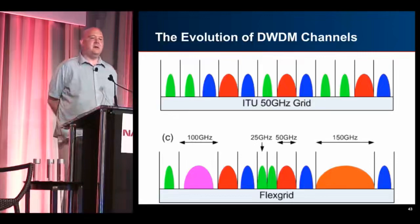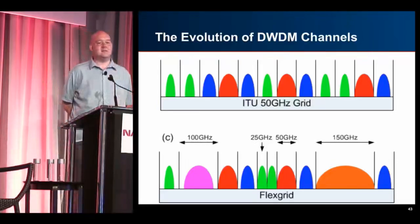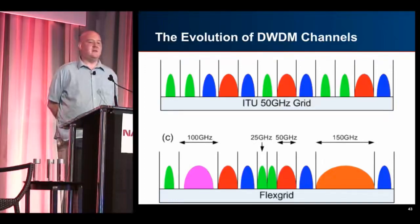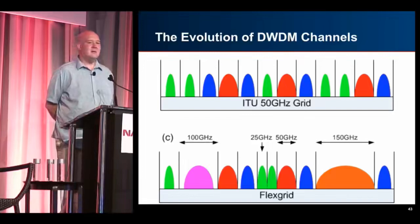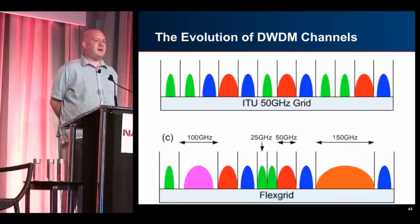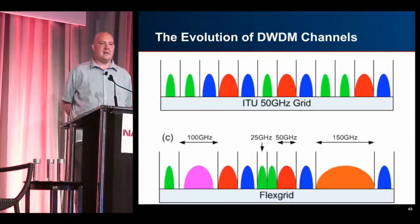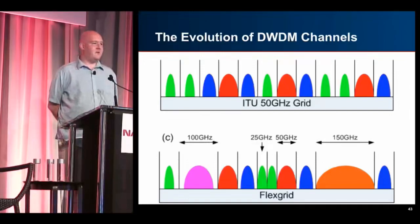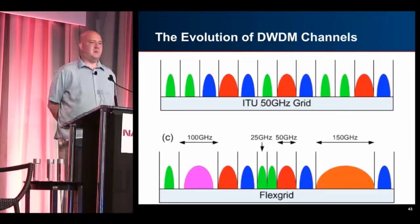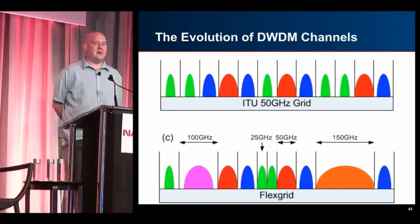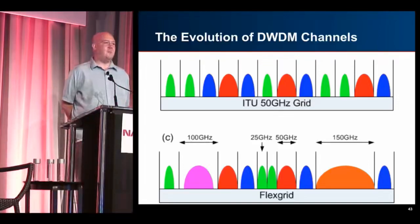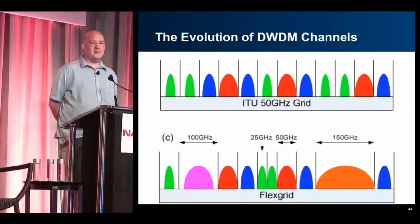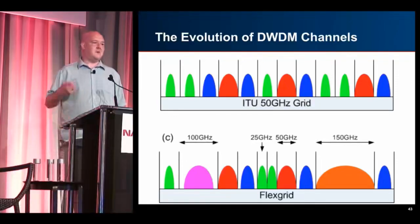Another evolution in DWDM is what's called flex grid, or gridless. Instead of everything fitting into a fixed 50GHz or 25GHz grid, you look at the variety of requirements — some old 10G systems that fit fine in 25GHz, some modern stuff that fits in 50GHz, and now people asking how to do 400G or terabit systems. The optical industry's answer is to get rid of the fixed grid and make it completely flexible: granularity down to 12.5GHz, mix and match, make one channel much larger and another much smaller, use the spectrum however you want. If you're deploying a modern system right now, this is the type of gear you'd be putting in.